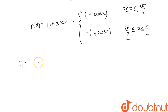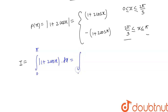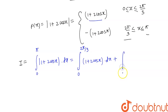So our integral, integration from 0 to π of |1 + 2cos x| dx, equals the integral from 0 to 2π/3 of (1 + 2cos x) dx, plus the integral from 2π/3 to π of −(1 + 2cos x) dx.